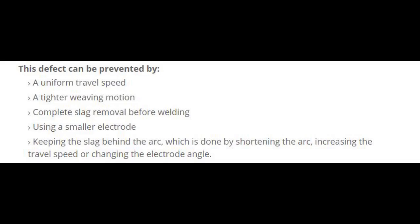This defect can be prevented by: maintaining a uniform travel speed, a tighter weaving motion, complete slag removal before welding, using a smaller electrode, and keeping the slag behind the arc — which is done by shortening the arc, increasing the travel speed, or changing the electrode angle.